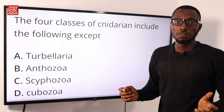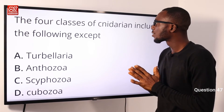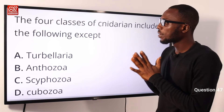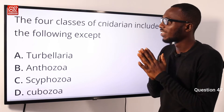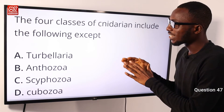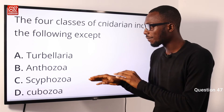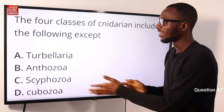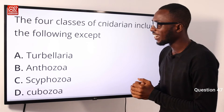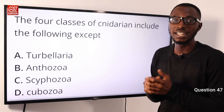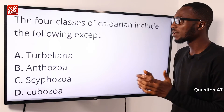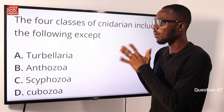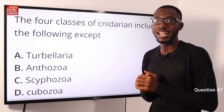Question 47: The four classes of Cnidaria include the following except which? Their classes are the Anthozoa, the Scyphozoa, the Cubozoa, and the Hydrozoa. Turbellaria is for free-living flatworms. So the correct option is option A as the exception.